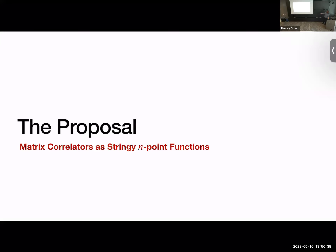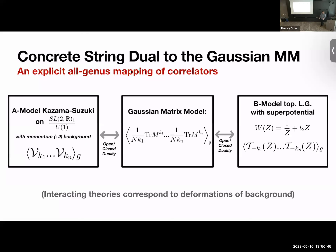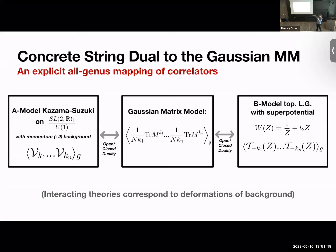Let's start with the proposal — asserting the equality of correlators and thinking of them as stringy endpoint functions. The claim, verified later, is an all-genus statement, true to all orders in 1/N, not just leading in N. If I look at the endpoint function of these traces, that is the same as computing a particular endpoint function on genus-g worldsheets in the B-model string — a topological Landau-Ginzburg theory that is twisted.